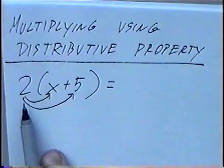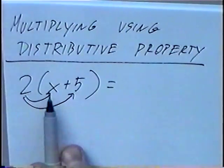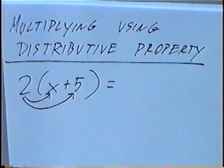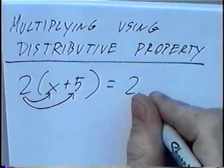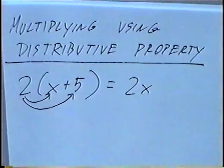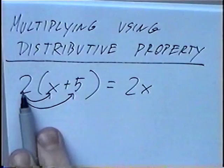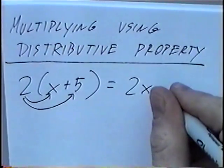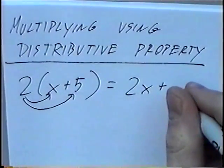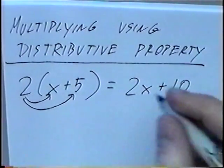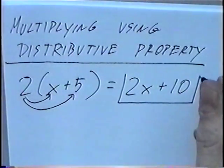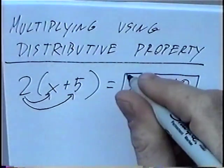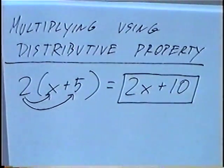So the first multiplication: 2 times x would be 2x, and 2 times a positive 5 would be plus 10. So our final answer is 2x plus 10.